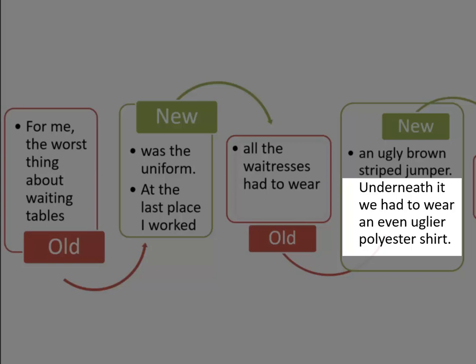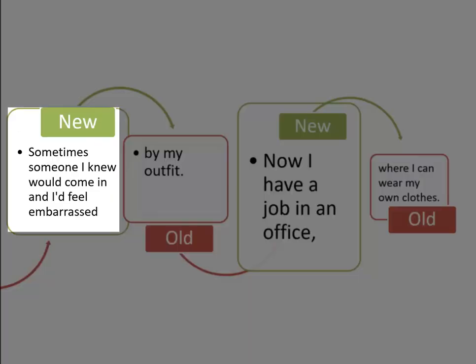I've classed the next sentence as only being new, but that's just for simplicity. Really, it does contain some old that it's linking back to. The sentence is: 'Underneath it, we had to wear an even uglier polyester shirt.' Can you see that it is actually old, because it's referring back to the ugly brown striped jumper?